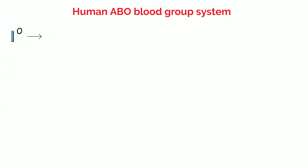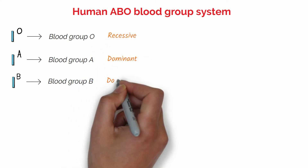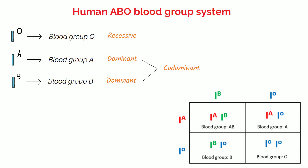Some genes have multiple alleles. For example, in the human ABO blood group system, there are three alleles for blood type. IO is the allele for blood group O, IA is the allele for blood group A, and IB is the allele for blood group B. IO is recessive, and IA and IB are co-dominant. The diagram shows a cross between two parents with heterozygous blood group A and heterozygous blood group B. It shows that the offspring could have any of the four different blood groups: O, AB, A, and B.